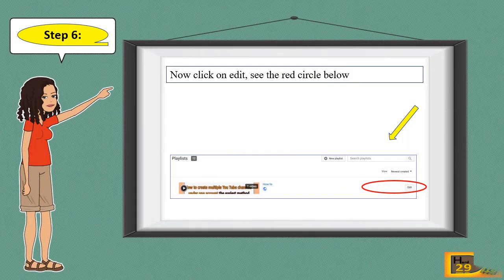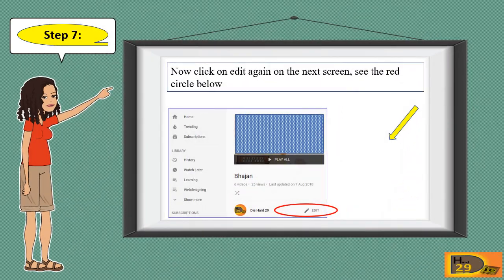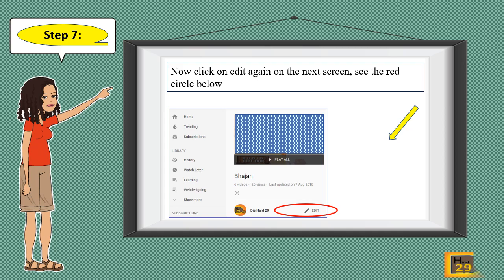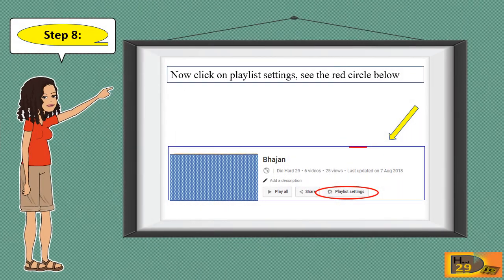Step 6: Click on Edit — see the red circle below. Step 7: Now click on Edit again on the next screen — see the red circle below.